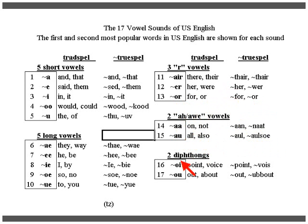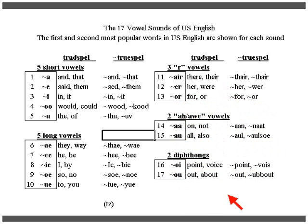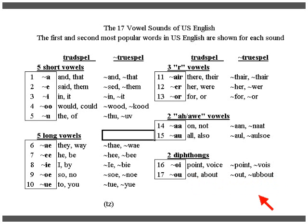There are two diphthongs. 'Diphthong' means two sounds — 'diph' means two and 'thong' means sound. The first is 'oy': 'point' is the most popular word and 'voice' is second, with the TrueSpell spelling shown. The second diphthong is 'ow': 'out' is the most popular word and 'about' is second. Notice that 'about' has a double consonant indicating stress on the second syllable.